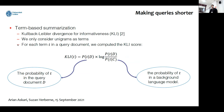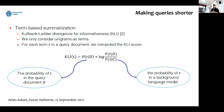For term-based summarization, we use KL divergence informativeness. We only consider unigrams as terms, and for each term in the query document, we compute the KLI score. For the foreground language model, we calculate the probability of query term T in document D. For the background language model, we consider the background collection — per query, we have 200 candidates in COLIEE 2020 — when computing the KLI score.